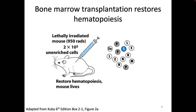Bone marrow contains a mixture of lots of different cells, including the stem cell. If we do a bone marrow transplant, we can restore hematopoiesis. For patients with Omen syndrome or different types of SCID who don't have RAG1 and RAG2 and can't do VDJ recombination — they can't make an adaptive immune system and will die really young without treatment. What we do is give them stem cells that have RAG1 and RAG2, allowing them to have a normal immune system.